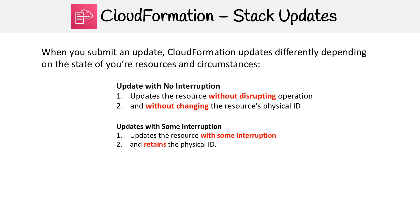The next case is updates with some interruption. There could be cases where we don't need to destroy the server, but we need to maybe disassociate it from a load balancer and then reassociate it, or the same thing with an auto scaling group. Because that happens, there is a chance for the service to experience downtime, but the physical ID is going to remain the same.